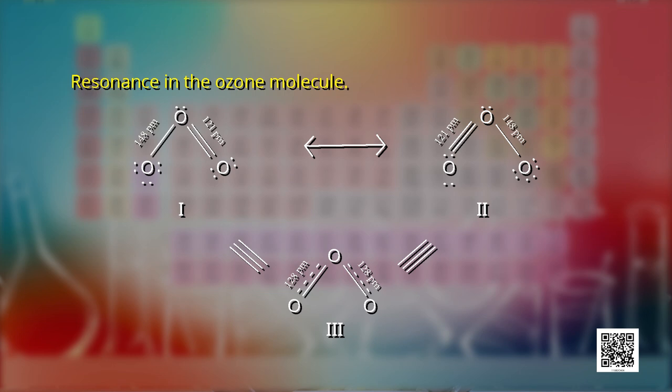After going through this lesson, you will be able to explain the electronic theory of chemical bonding developed by Kossel and Lewis, draw Lewis structures of simple molecules based on the octet rule, and take initiative to know more about scientific discoveries. Happy learning!